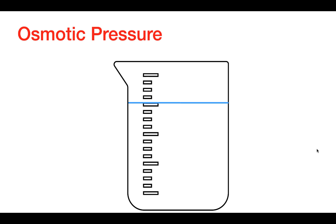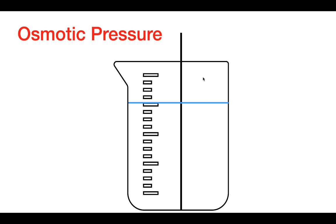The second important pressure for determining where fluid is going to flow is the osmotic pressure. In order to understand what osmotic pressure is, let's look at this demonstration. Here we have a beaker that is filled with water, and let's say that we put a semi-permeable barrier between the two compartments — a semi-permeable barrier that is only permeable to water, so in other words only water can pass through it.